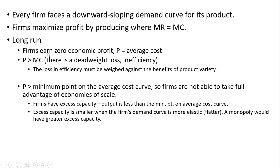In the long run, firms earn zero economic profit — that is, the price will equal average cost. In the long run, the price will exceed the marginal cost of production, and that is an indication that there is a deadweight loss or inefficiency in this market structure. This loss and inefficiency must be weighed against the benefits of product variety.